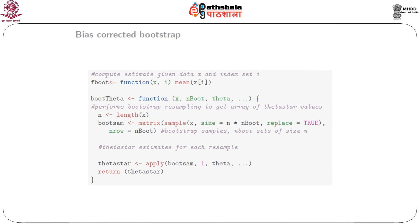Now we come to the bias-corrected bootstrap. We define a function called fboot, which computes the estimate given data x and index set i: fboot = function(x, i) mean(x[i]). We also create a function boottheta that takes argument x and performs bootstrap resampling to return an array of theta-star values.